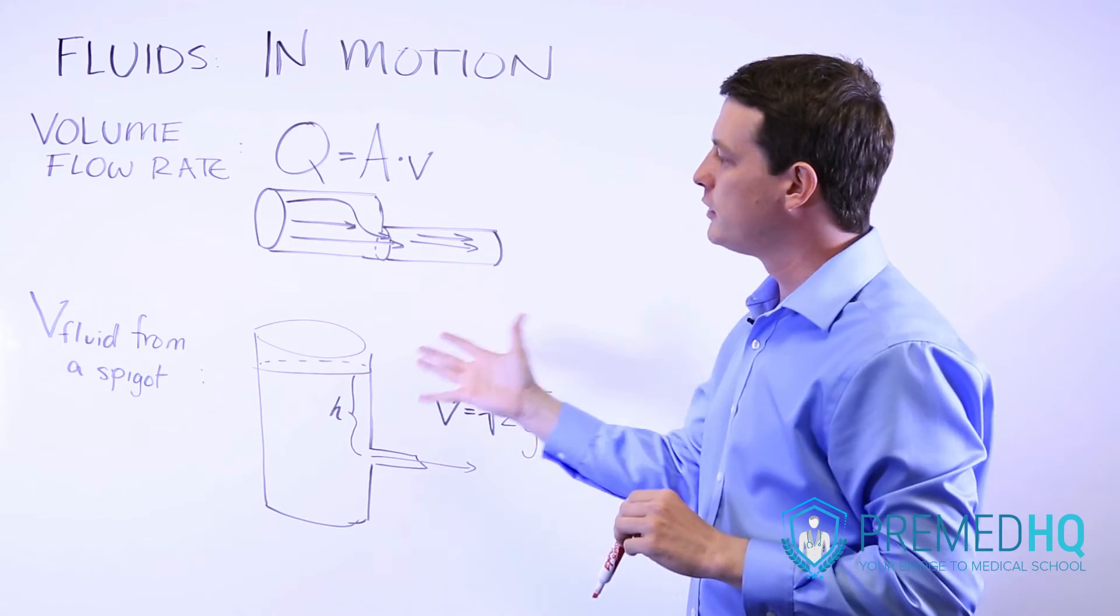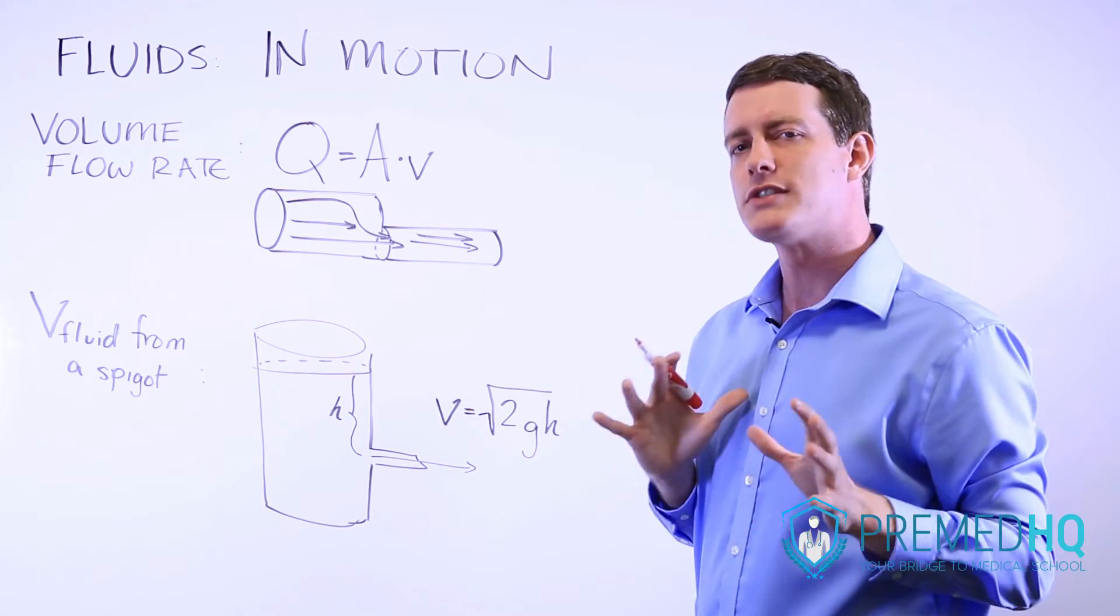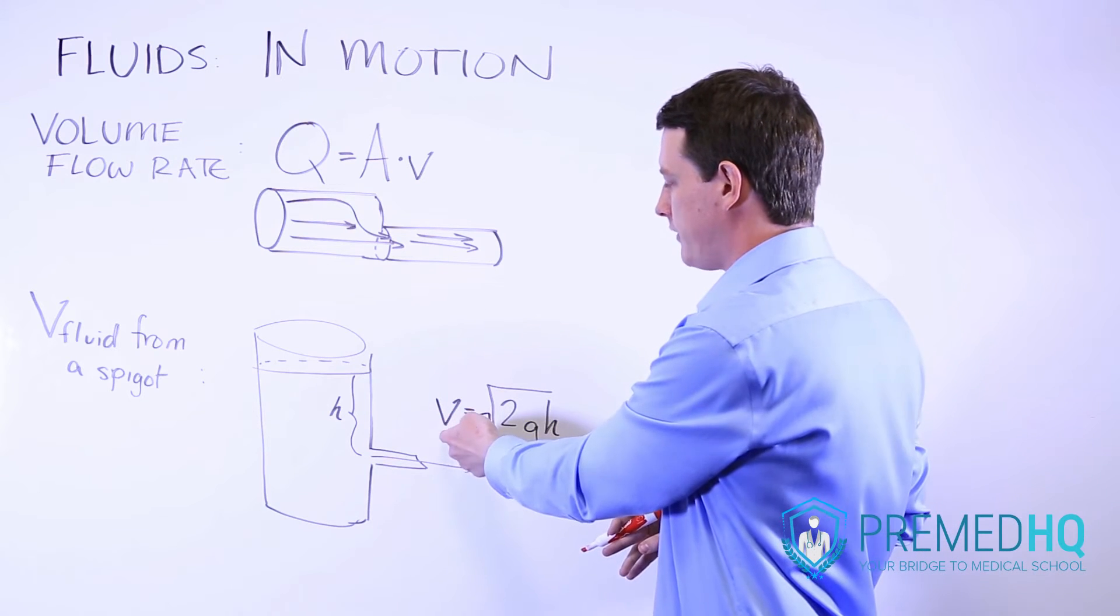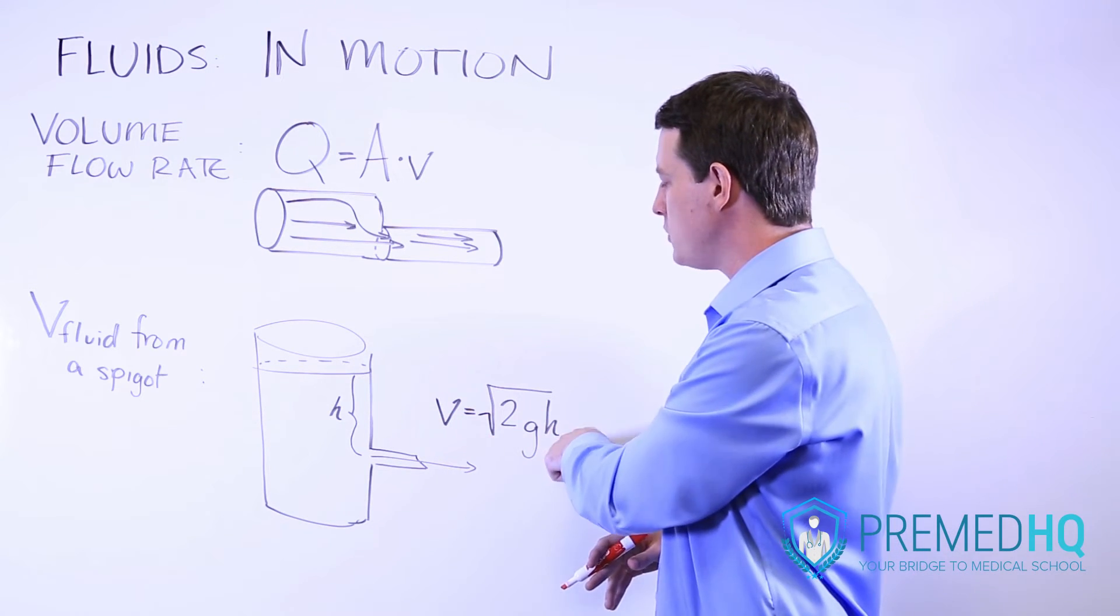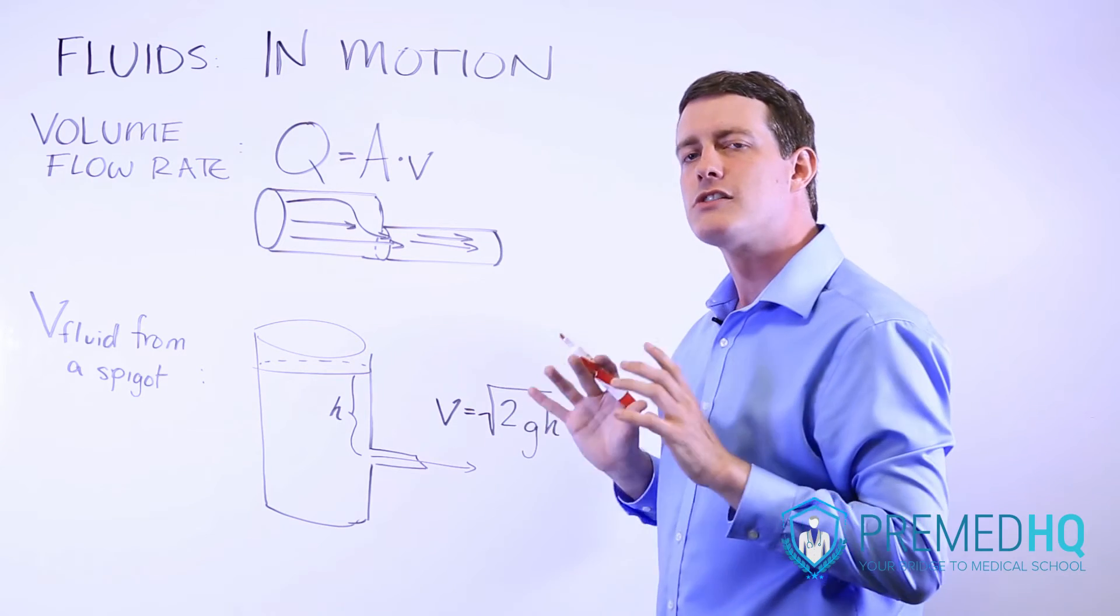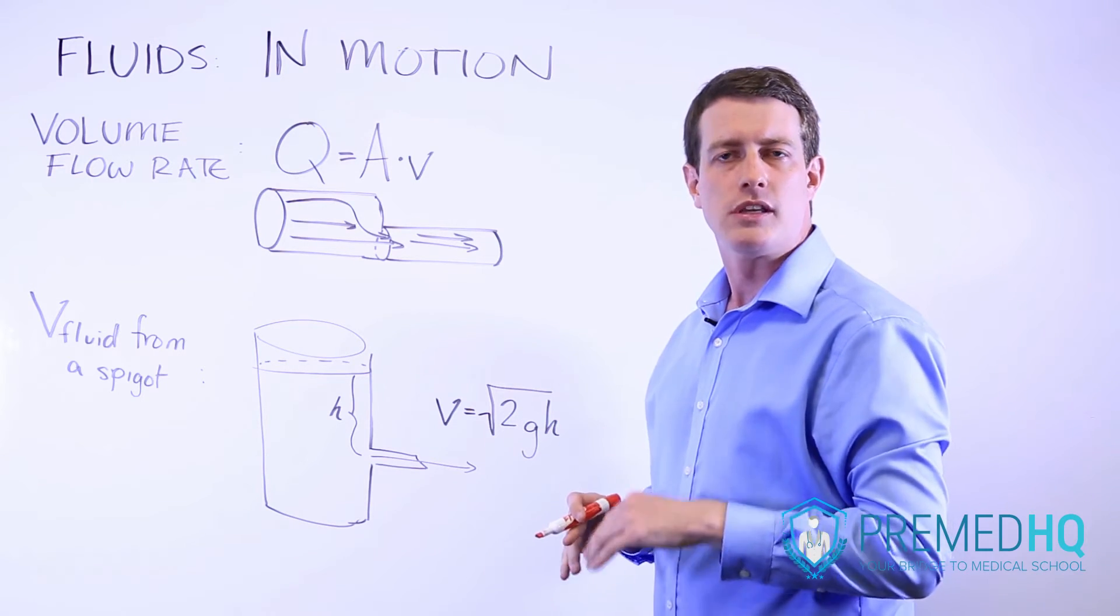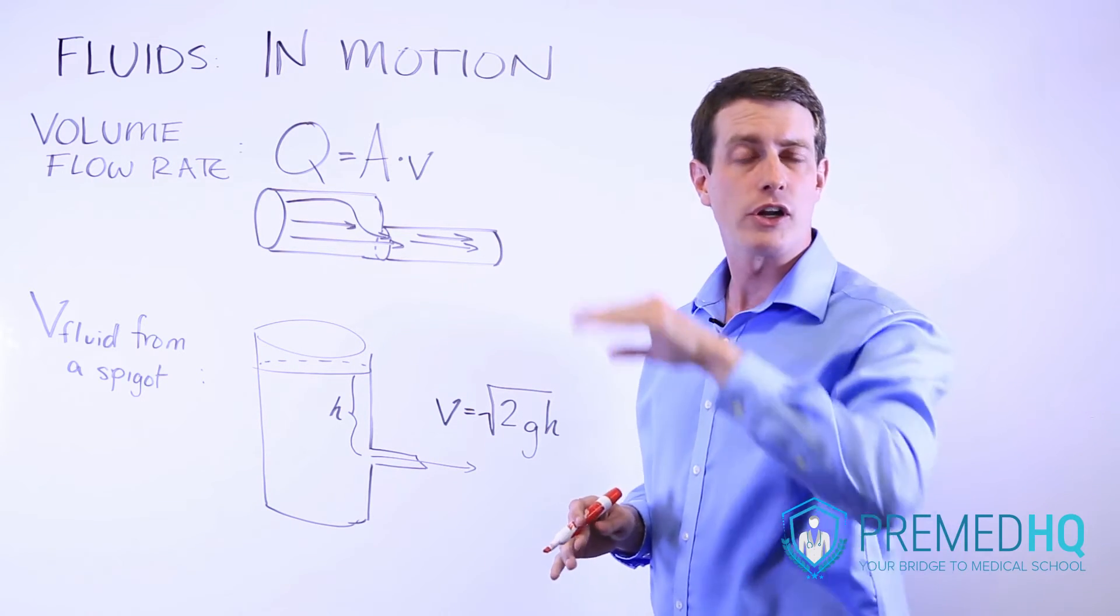The velocity of fluid from a spigot is a formula that you've seen before. This formula is velocity equals the square root of 2GH, and this looks very similar to the velocity of a falling object that started from rest.